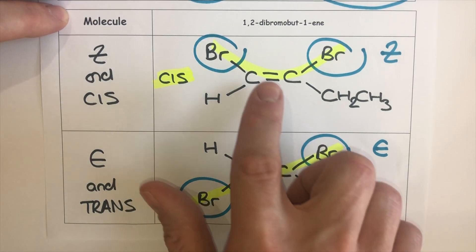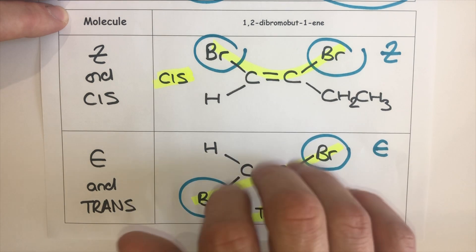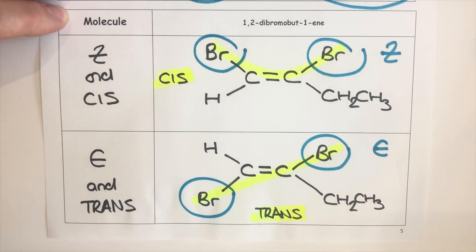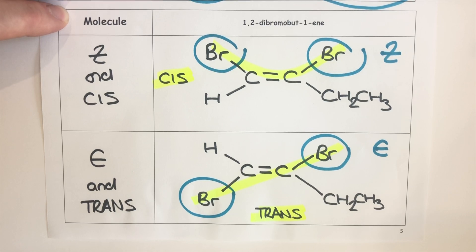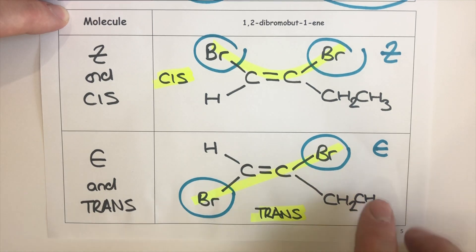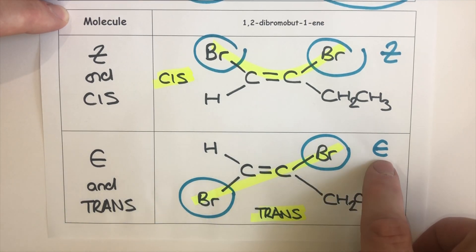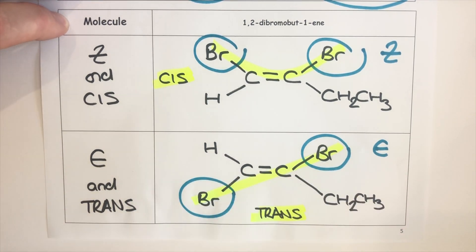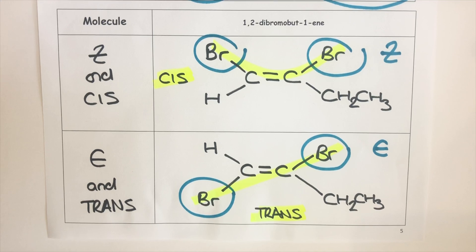In an example with two bromines in the double bond: the fact that they are the same group and on the same side makes this the cis isomer. The fact that the two bromines also happen to be the high priority groups on each carbon using the CIP rules means this is also the Z isomer. Flipping one side gives the bromines across from each other — making it trans — and since they are still the high priority groups, it is also E. This is a different allocation of cis/trans and E/Z compared to the previous example — don't assume that the same element connected to the double bond carbons won't be responsible for both types of stereoisomerism.